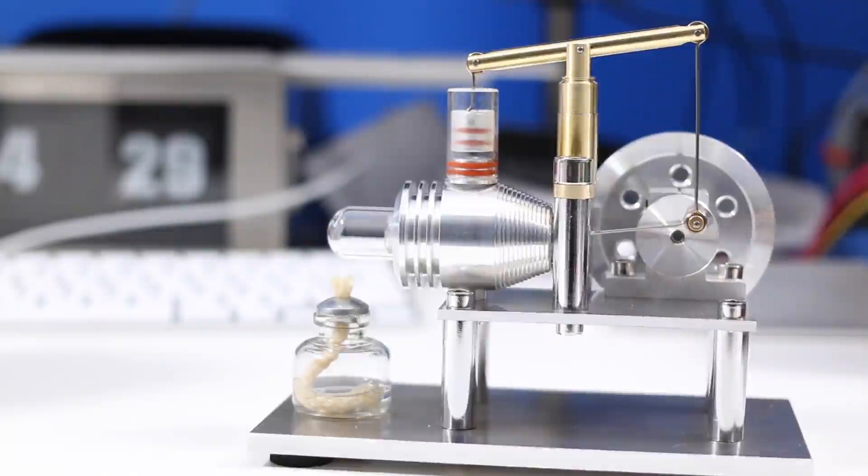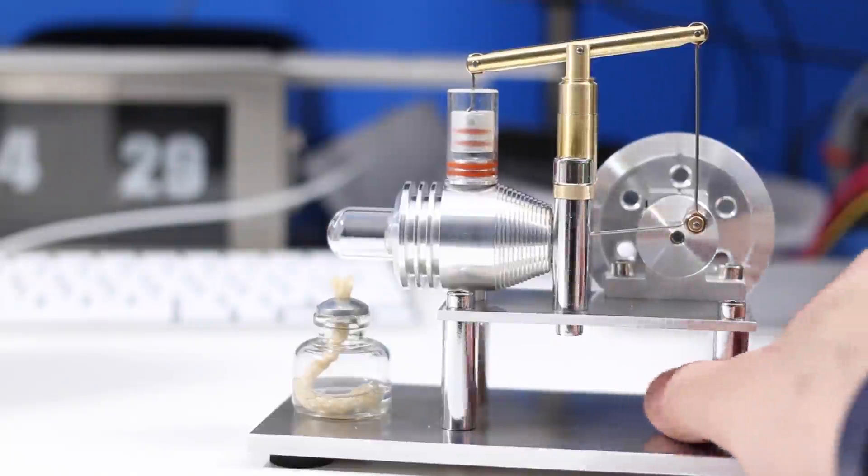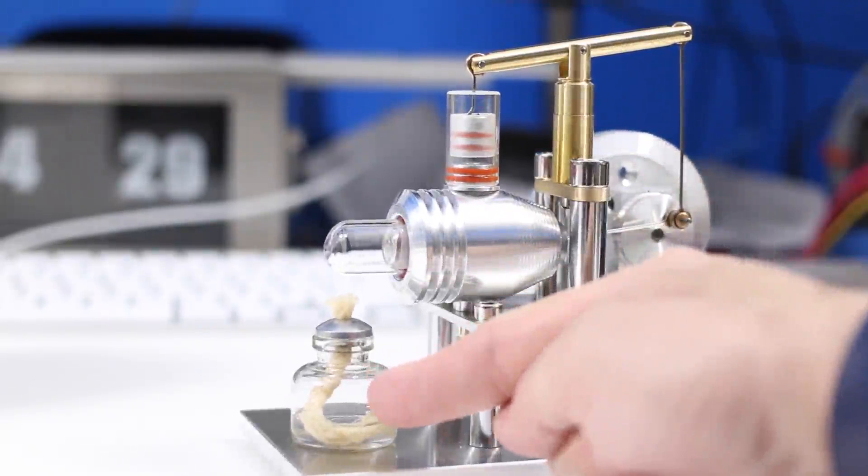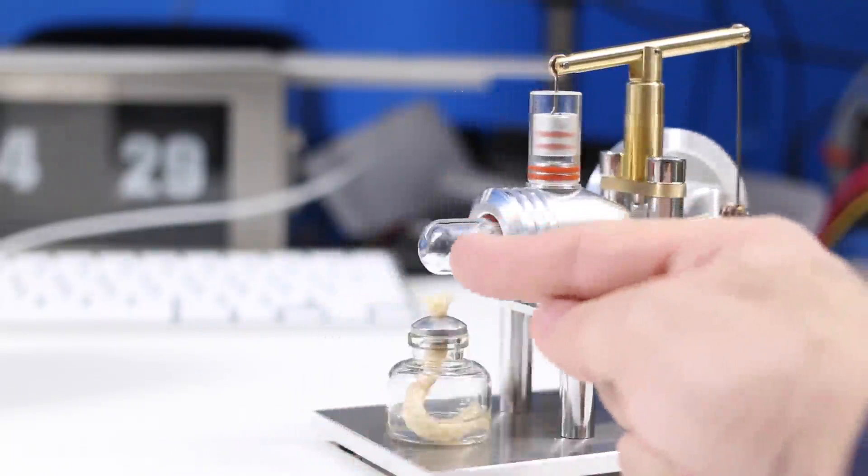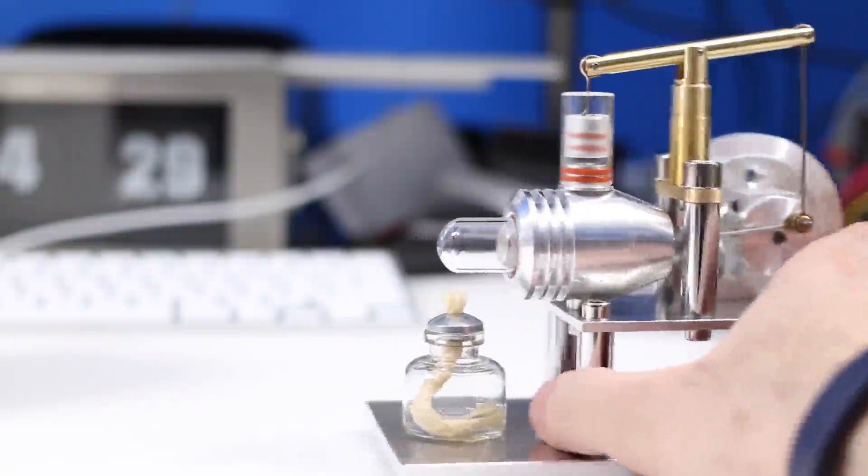Now, if you're not familiar with a Sterling engine, it's an external combustion engine, which means we create heat on the outside, not inside the cylinder. And it has a cylinder right in there.